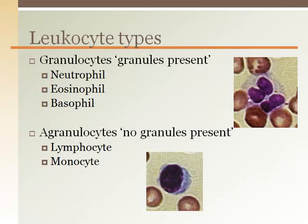The five types of leukocytes are grouped either as a granulocyte or an agranulocyte. The granulocytes are neutrophils, eosinophils, and basophils, which contain chemical-filled granules. In addition to their granules, they also have an irregular, convoluted nucleus.